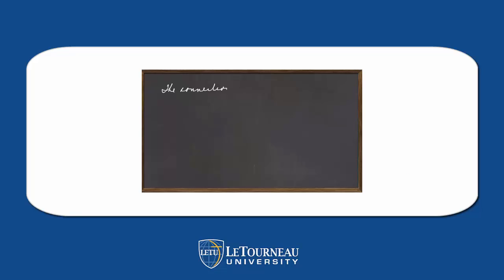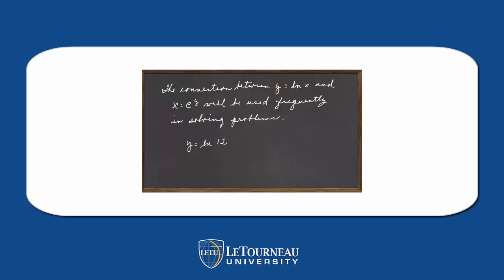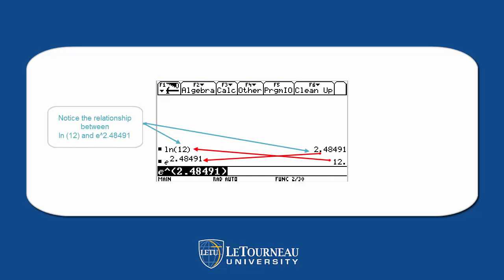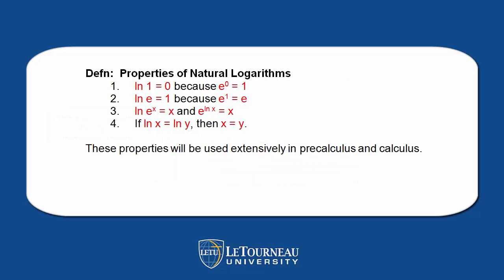Let's look at a few examples. Remember, the connection between y equals ln of x and x equals e to the y will be used frequently in our future work. We will be solving problems going back and forth between these. So if we say y equals the natural log of 12, then we're basically saying that 12 is equal to e to the y. Notice you do have a natural logarithm key on the keyboard of your calculator. Let's turn around and do e raised to the 2.48491 power, and notice the relationship between that and the natural log of 12.